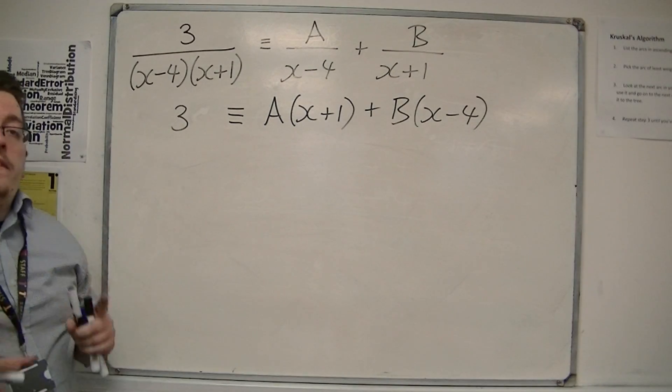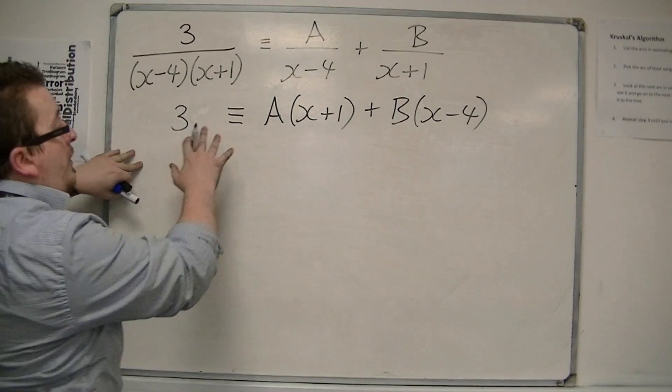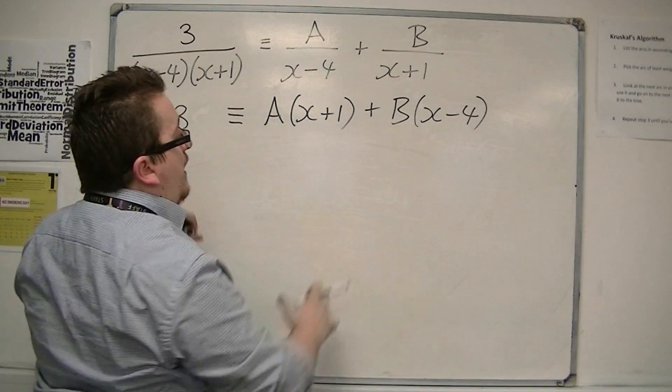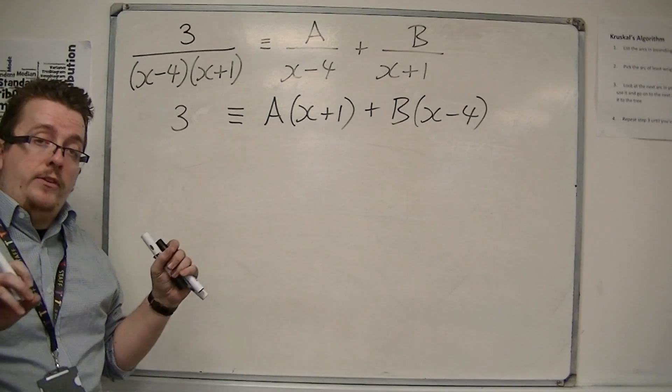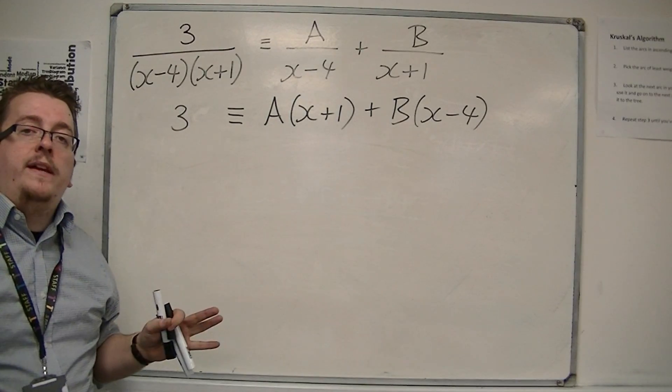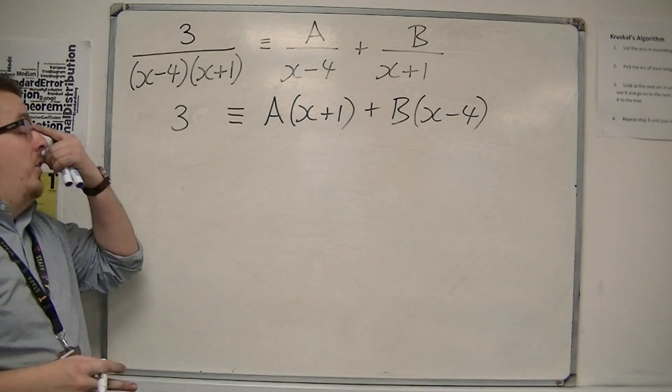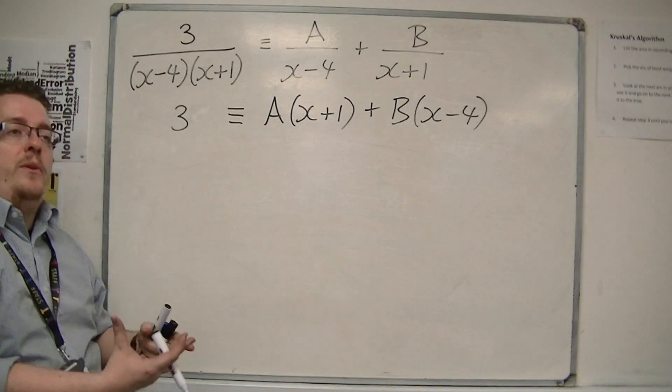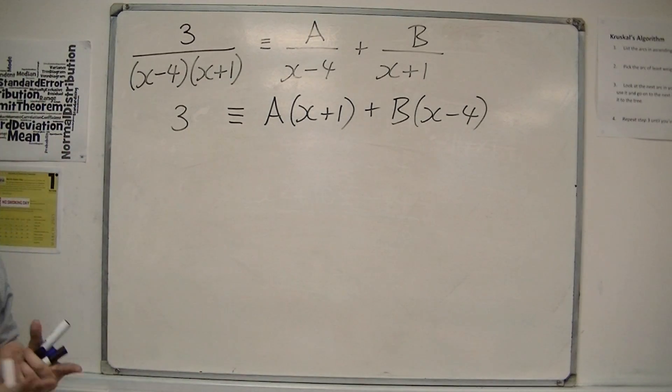Now, this is where the equivalency comes in. Because I'm saying that one side is equivalent to the other, this must be true for all values of x. Not just one value of x, or two, but all values of x. So, because I'm saying that it's equivalent, that means I'm allowed to choose values of x, and I haven't changed anything.